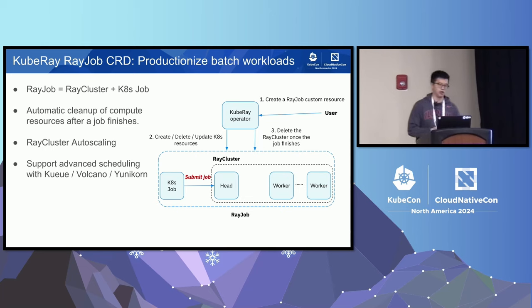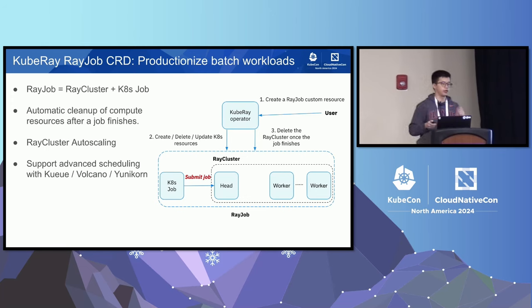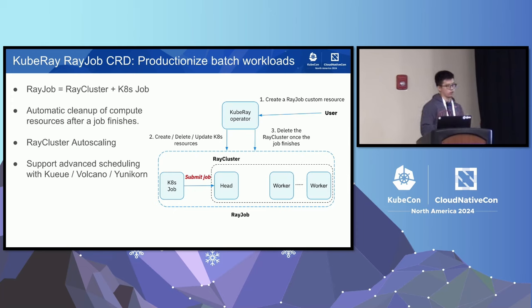In the Kubernetes community, KubeRay also offers the RayJob CRD to help productionize batch workloads. The RayJob CRD is equivalent to a Ray cluster CRD plus a Kubernetes job — it provisions a Ray cluster, submits the Ray job through the cluster, monitors job status, and automatically cleans up compute resources after completion. The underlying Ray cluster also supports auto-scaling. RayJob also supports advanced scheduling with Kueue, Volcano, and Yunikorn.